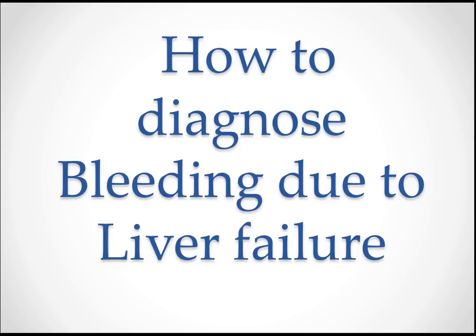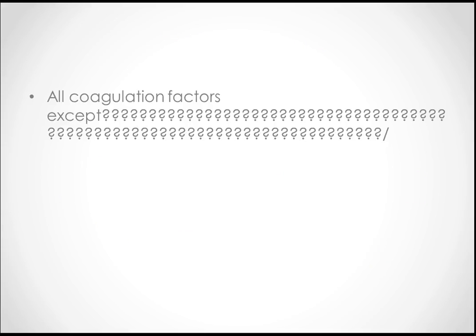We're going to talk about how to diagnose a bleeding disorder in a liver failure patient. In the USMLE examination, they will pose a question where a patient is in liver failure and doing fine, but suddenly starts to see blood in his stools or has hematemesis. They might also give clinical features of liver failure with a bleeding disorder — try to think of bleeding due to liver failure.